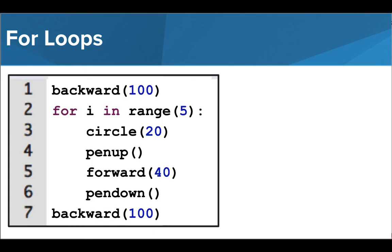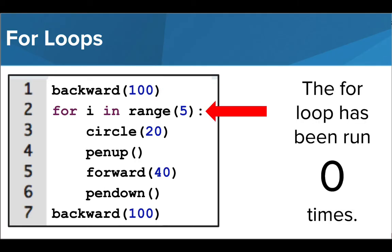Let's trace through what is happening when this program is run. The first command the computer runs tells Tracy to move backwards 100 pixels. Then we get to the line that initializes or starts a for loop. We will dive a little deeper into what is actually happening when this line is run in a later lesson. But for now, just know that the computer reads this line and knows it needs to start a for loop.